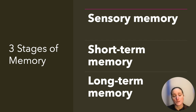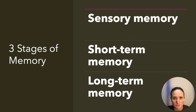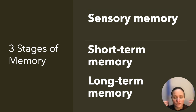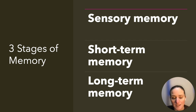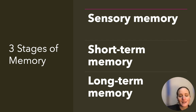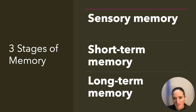There are three stages of memory: sensory memory, short-term, and then long-term. Sensory memory is information that comes from our eyes, our ears, and our other senses. If we pay attention to it, it's sent to the second stage of memory.